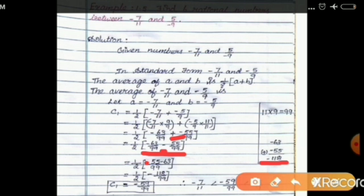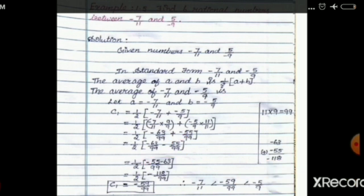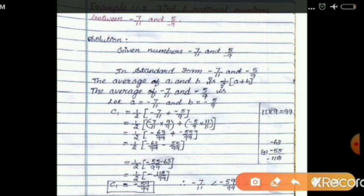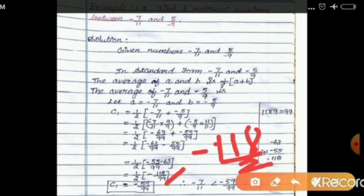Adding minus 63 and minus 55 gives minus 118. So we have 1 by 2 into minus 118 by 99. We cancel using the 2 table: minus 118 divided by 2 gives minus 59. Therefore C1 equals minus 59 by 99.